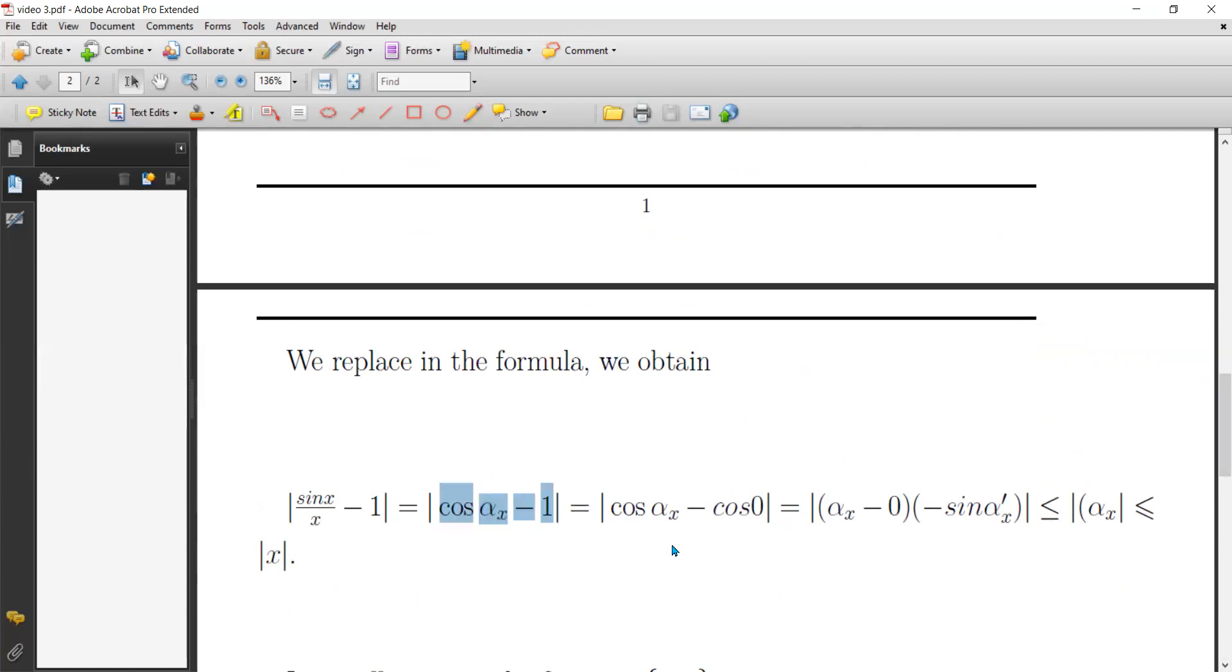Which can be written as cosine alpha x minus cosine zero, because cosine zero is equal to one. We apply again, once again, the intermediate value theorem to cosine alpha x. We will get alpha x minus zero by minus sine alpha prime x.